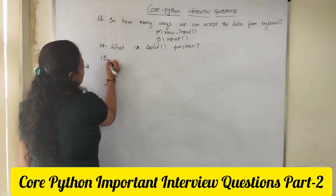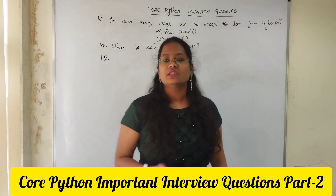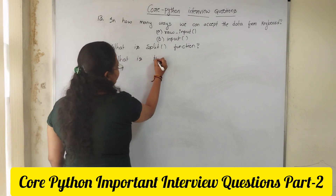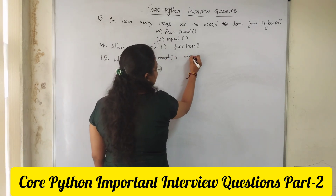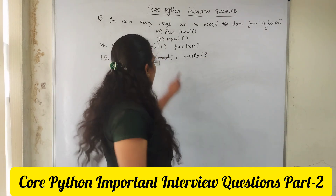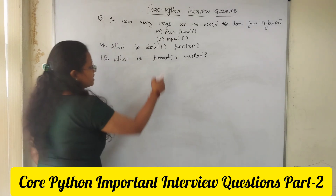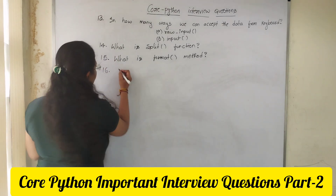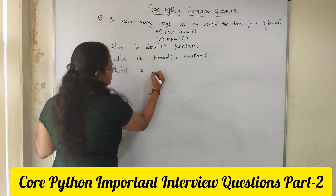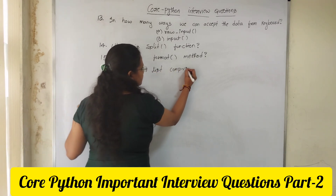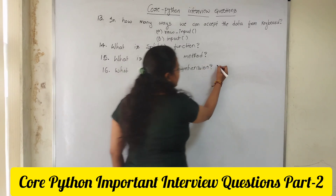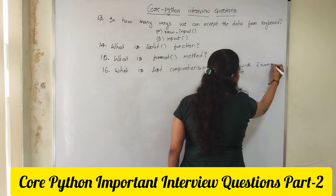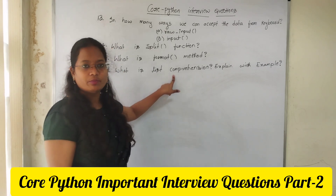The 15th question: when you don't want to use multiple print statements, then we have to use the format method. The format method is very important. The 16th question is about list comprehension. List comprehension is very important — explain with an example. Here also we can use the split function, and you need to accept multiple values using list comprehension.